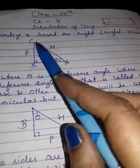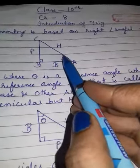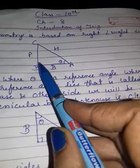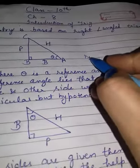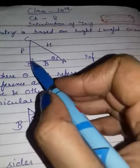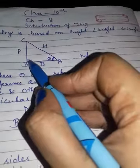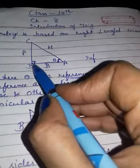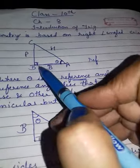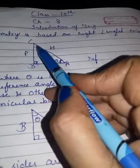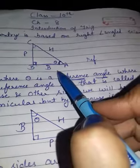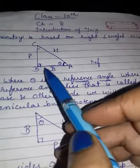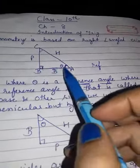I made one right angle triangle. You know this is your hypotenuse, but you might be thinking this is the perpendicular — no, this is not a perpendicular. Why? Because it depends on your reference angle. The reference angle is the angle where theta and 90 degrees both lie on that side, which is known as your base, and the other one is known as your perpendicular.